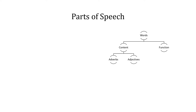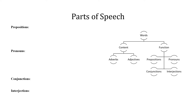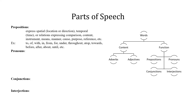Traditional function words include prepositions, pronouns, conjunctions, and interjections. Prepositions typically express spatial, temporal, or relational meanings — words like to, of, with, in, from, for, under, throughout, atop, towards, before, after, about, until. Pronouns substitute for a noun or noun phrase: I, me, my, we, us, our, you, your, that, former, latter, whom, what, which, one, something, nobody. Conjunctions connect words, phrases, or clauses: and, but, or, so, yet. Interjections are expressions that occur as an utterance on their own and express a spontaneous feeling or reaction: whew, uh oh, yikes.